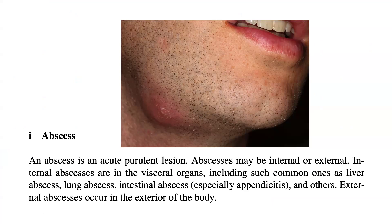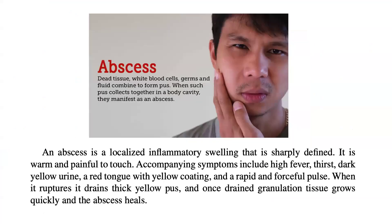External abscesses occur in the exterior of the body. An abscess is a localized inflammatory swelling that is sharply defined. It is warm and painful to touch. Accompanying symptoms include high fever, thirst, dark yellow urine, a red tongue with yellow coating, and a rapid and forceful pulse.